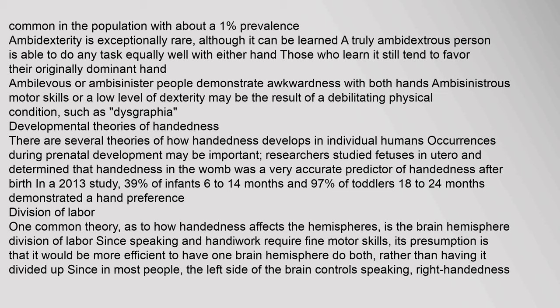Developmental theories of handedness: There are several theories of how handedness develops in individual humans. Occurrences during prenatal development may be important. Researchers studied fetuses in utero and determined that handedness in the womb was a very accurate predictor of handedness after birth. In a 2013 study, 39% of infants 6–14 months and 97% of toddlers 18–24 months demonstrated a hand preference.